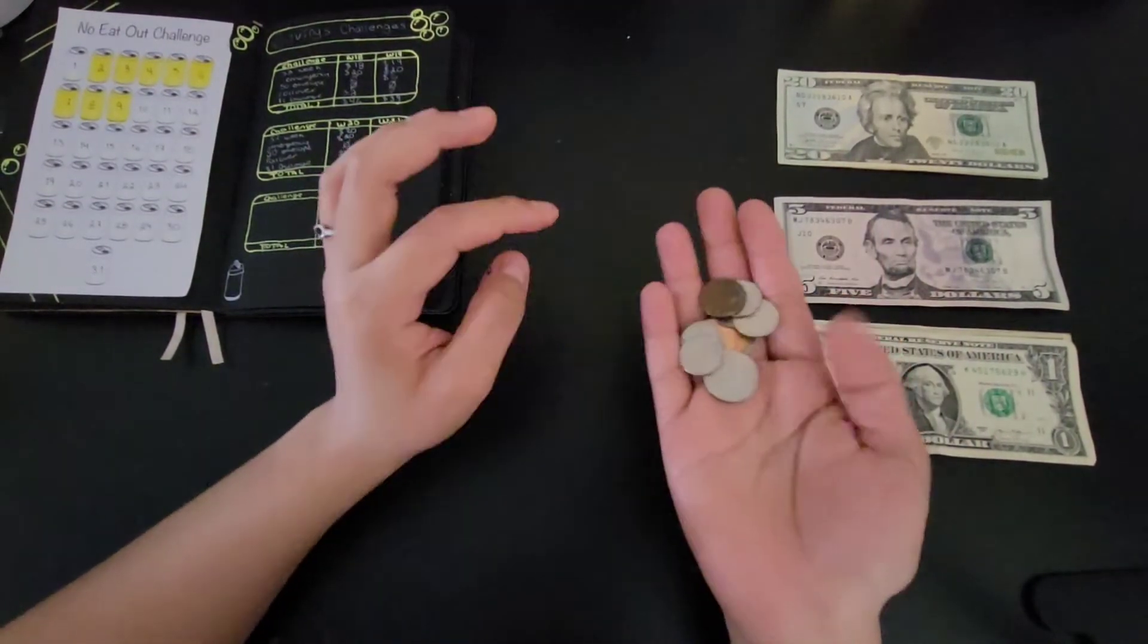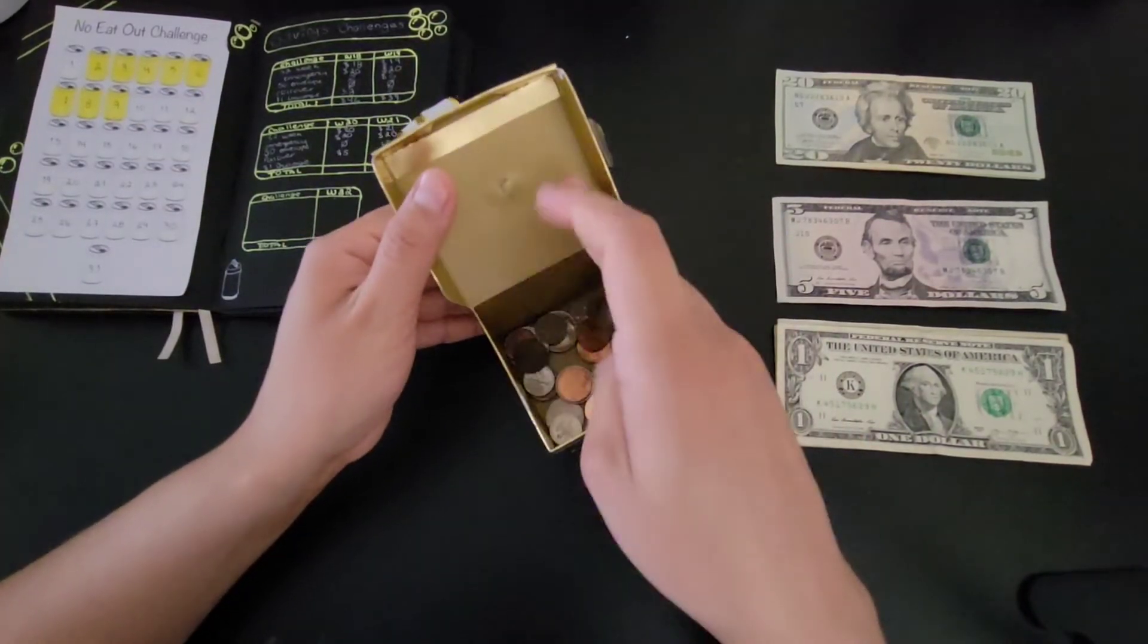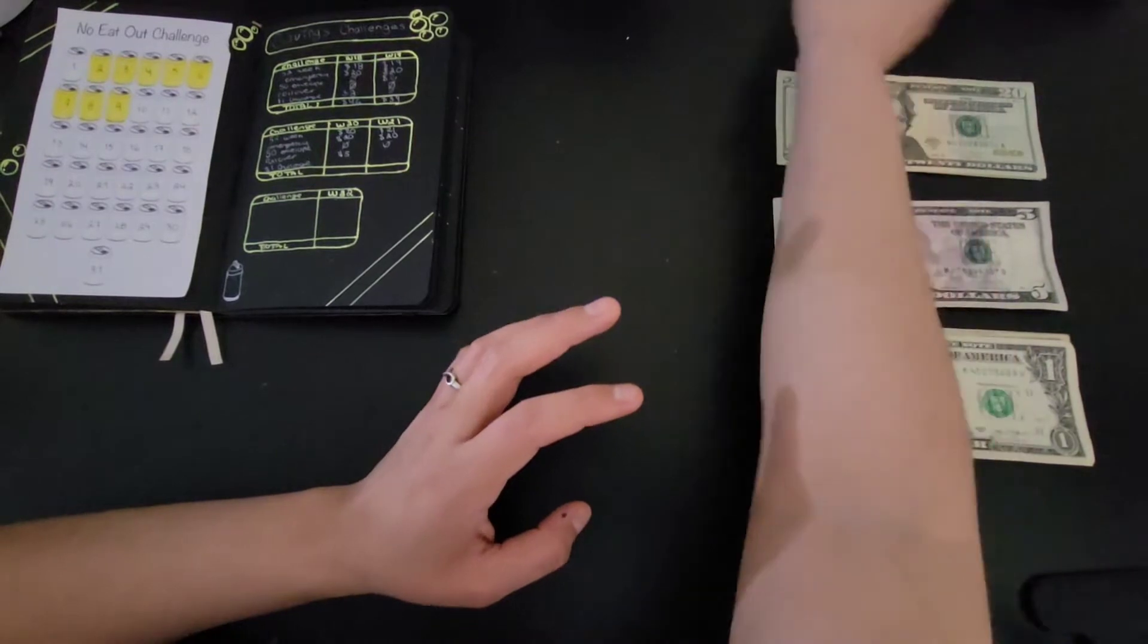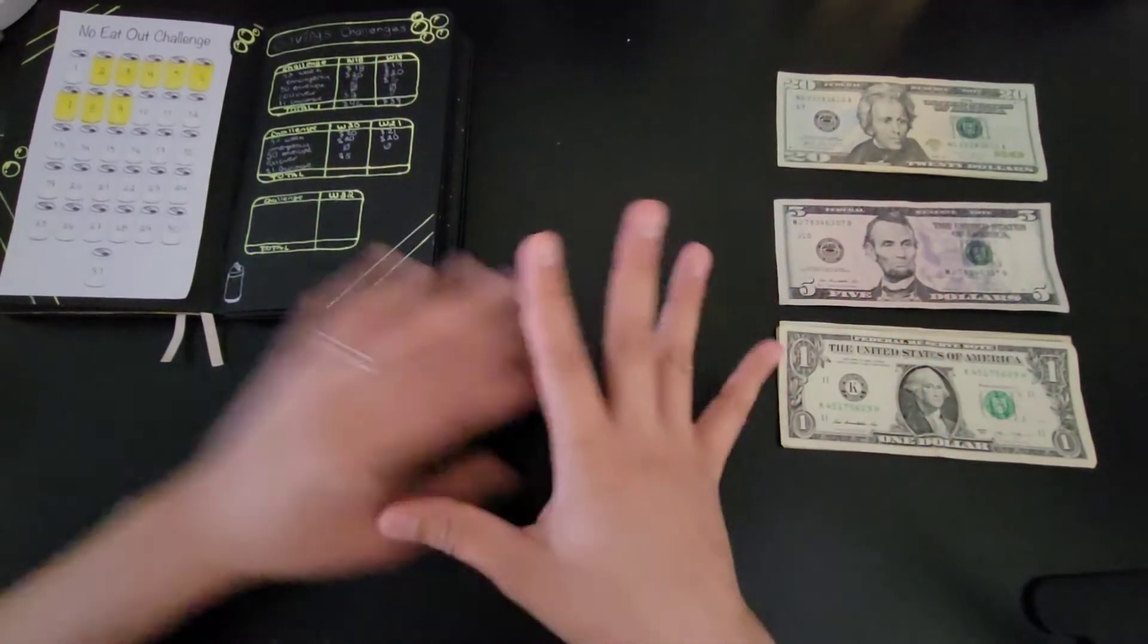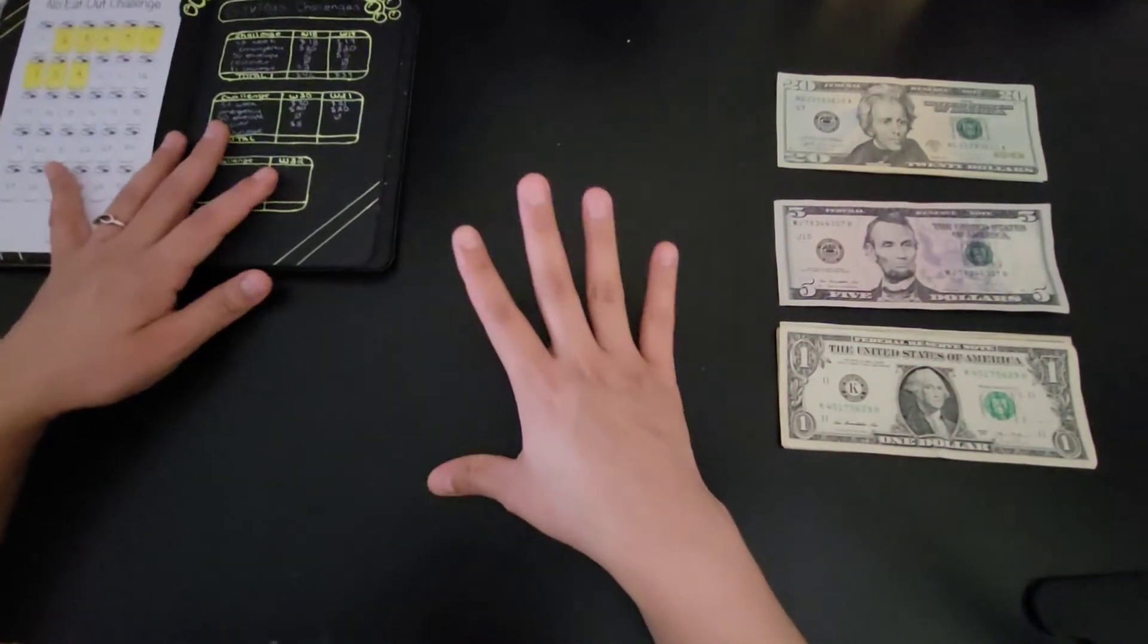This is all the coins we have and I just put them in this little box meanwhile until the end of the month, then I put them in my jar, in my coin jar.